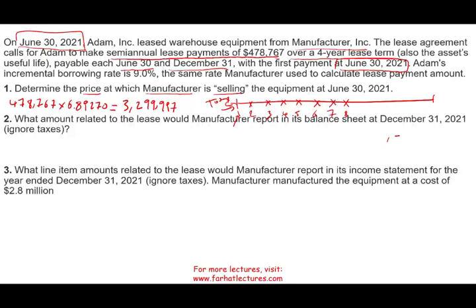The selling price is our lease receivable. If we are preparing the journal entry, we record a lease receivable of $3,299,997 and a sales revenue credit of $3,299,997, because this is a finance lease — essentially a sale.